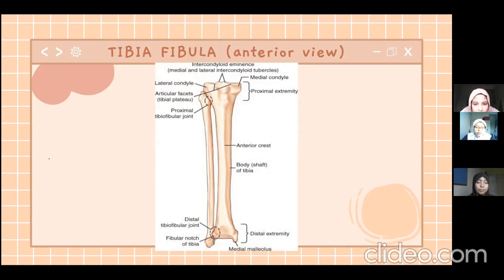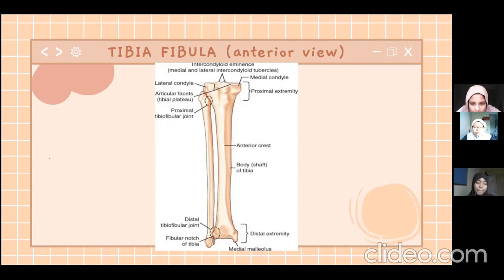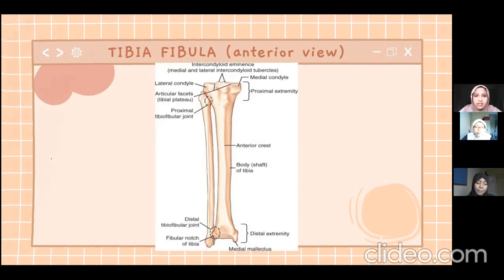That part is called the fibular notch of the tibia, and on the body it is called the shaft of tibia. At the upper part we have lateral condyle, medial condyle, and also intercondylar eminence, and at the distal part we have medial malleolus and also the distal extremity.